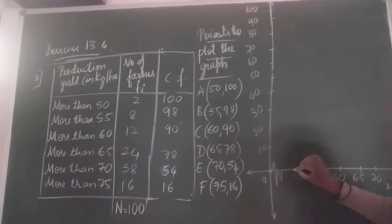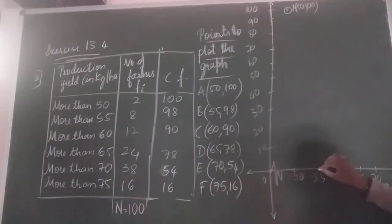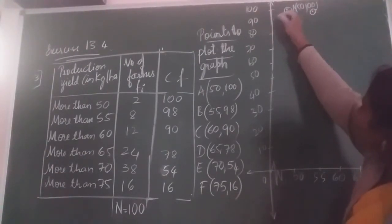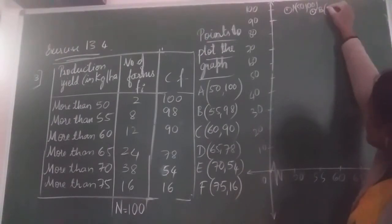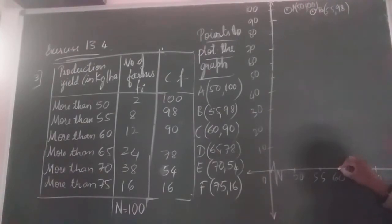So the first point A is 50, 100. Next, B is 55, 98. Next, C is 60, 90.